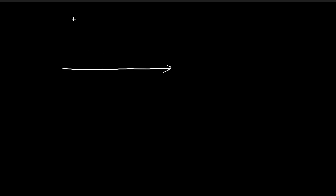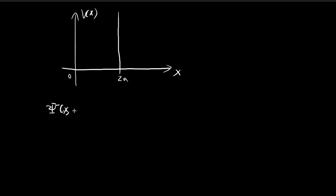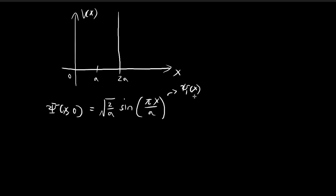In this problem we have a very special setup. We have an infinite square well that has a width of 2a. The initial wave function is going to be equal to the stationary state for the infinite square well with a width of a. So the initial wave function would be given by the formula: sine(πx/a), which is ψ₁(x) for the infinite square well with width a. But now we are in an infinite square well with a width of 2a.